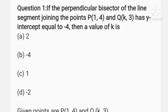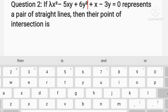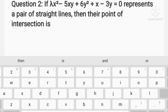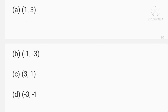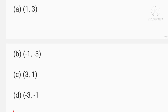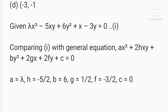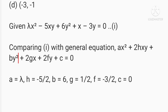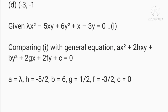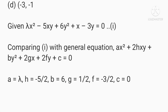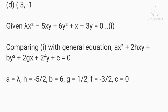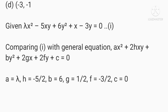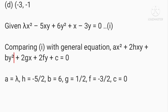The next question: if λx² - 5xy + 6y² + x - 3y = 0 represents a pair of straight lines, then their point of intersection is — options are (a) (1, 3), (b) (-1, -3), (c) (3, 1), and (d) (-3, -1). Comparing with the general equation ax² + 2hxy + by² + 2gx + 2fy + c = 0, we get a = λ, h = -5/2, b = 6, g = 1/2, f = -3/2, and c = 0.